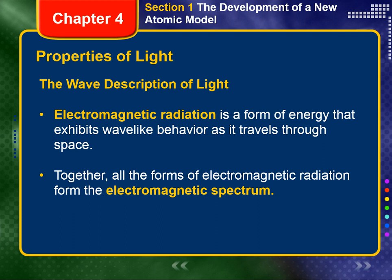Properties of Light. Before 1900, scientists thought light behaved solely as a wave. This belief changed when it was later discovered that light also has particle-like characteristics. Still, many of light's properties can be described in terms of waves. A quick review of these wave-like properties will help you understand the basic theory of light as it existed at the beginning of the 20th century.